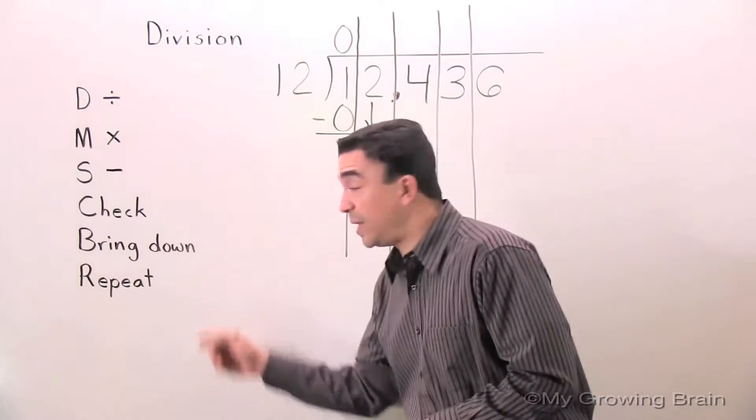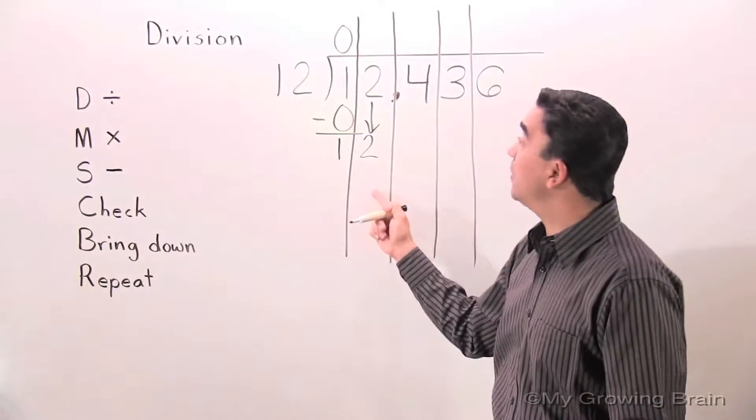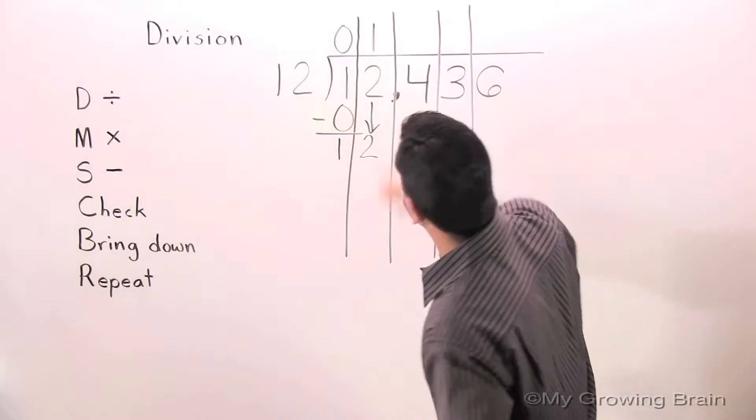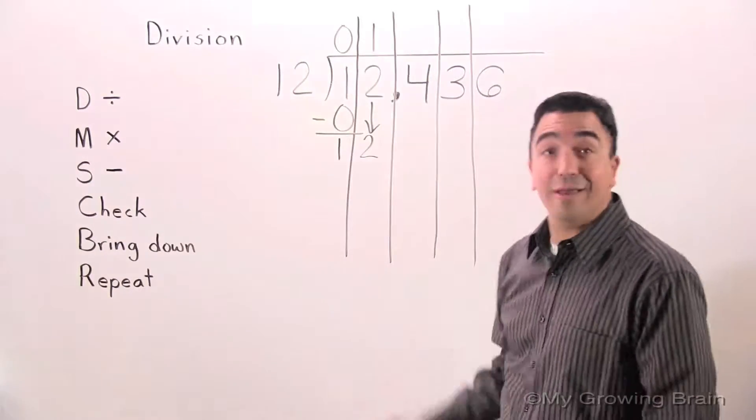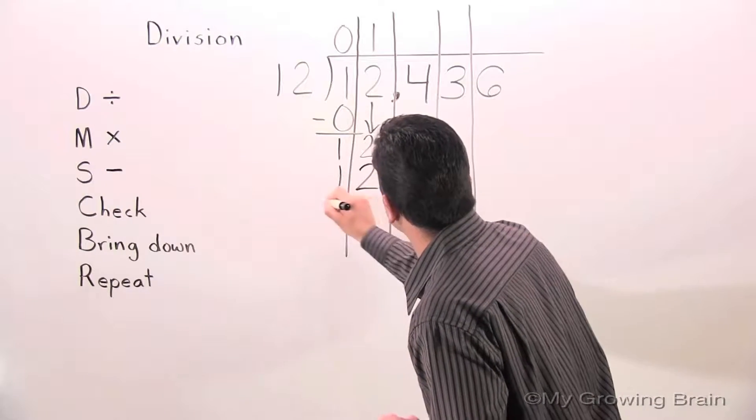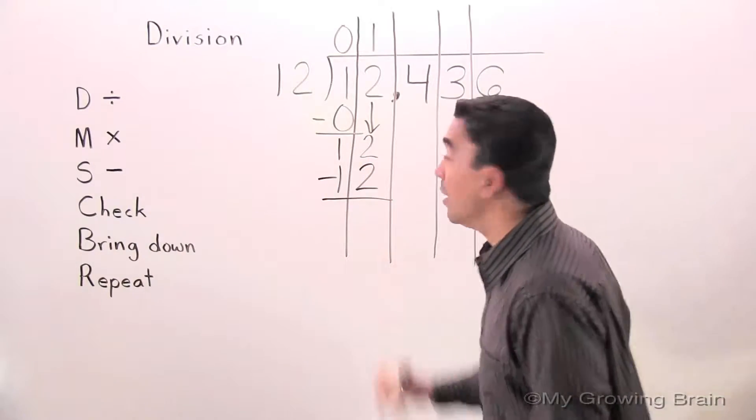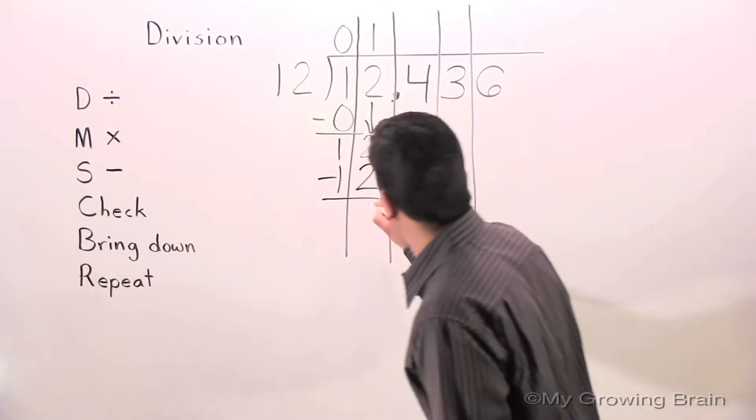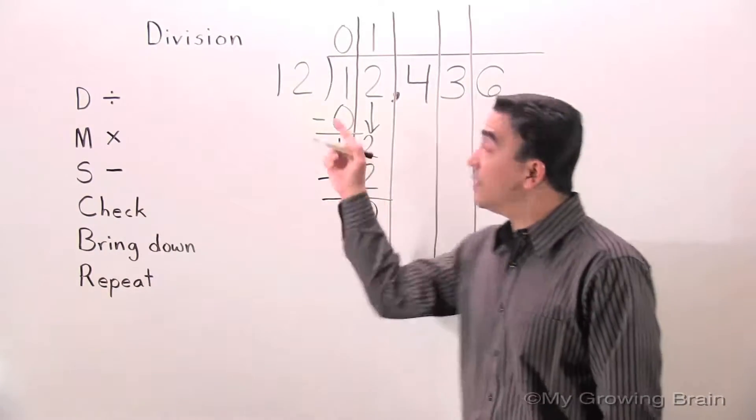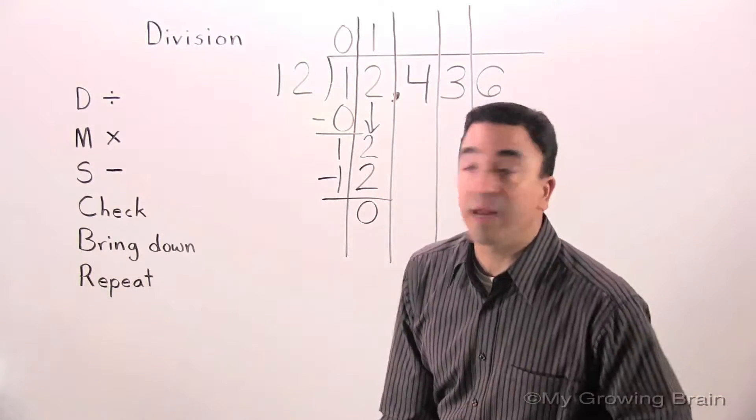Next step: repeat. Go all the way back to the top. Repeat the whole process again. Divide. 12 divided by 12 is 1. Multiply. 12 times 1 is 12. Next step: subtract. 12 minus 12 is 0. Next step: check. 2 is less than 12. Keep on going. Next step: bring down.